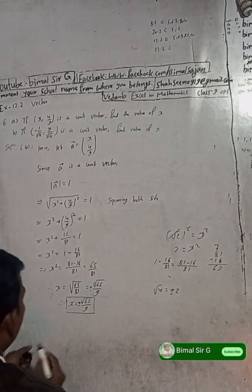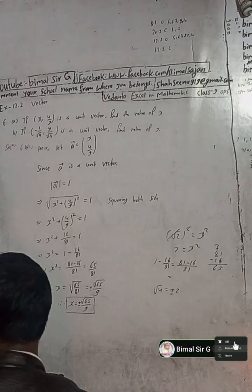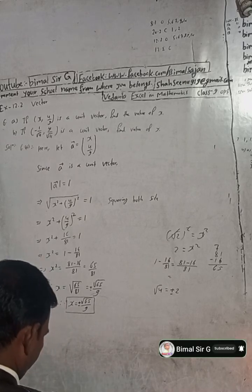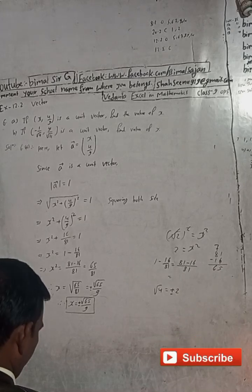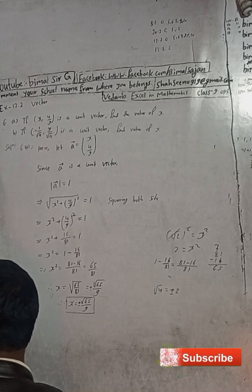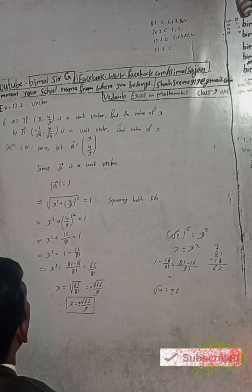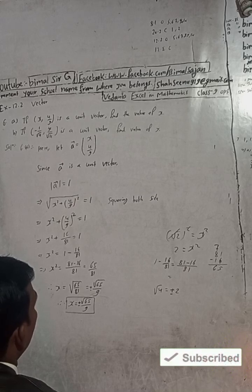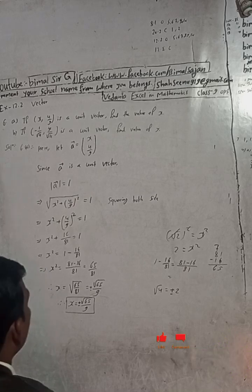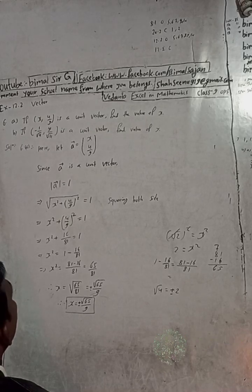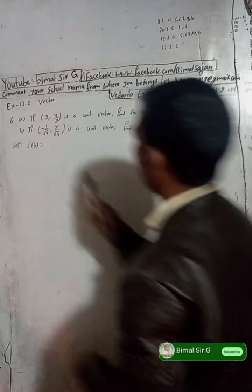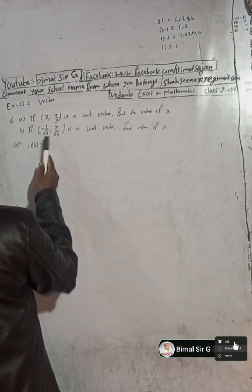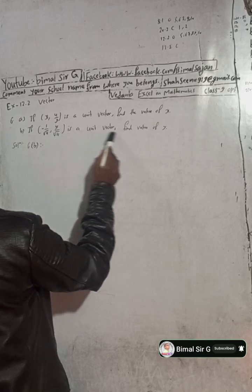Therefore x equals plus or minus root under 65 by 9. That completes the solution for 6A. Now let's move to the solution for part B, question number 6B: if (-1/√11, y/√11) is a unit vector, find the value of y.